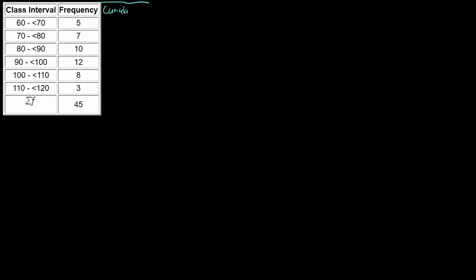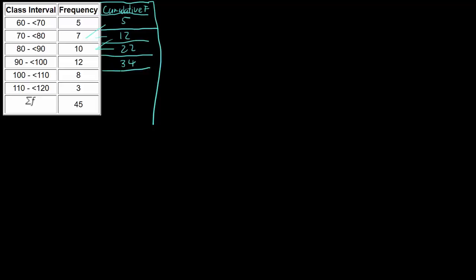To create our ogive we still need our cumulative frequency column, which we'll use to make up our ogive. The cumulative frequency is just a running total of our frequencies as we go down. So we start off with 5, then 5 plus 7 gives 12, 12 plus 10 gives 22, 22 plus 12 gives 34, 34 plus 8 gives 42, and 42 plus 3 makes 45. We know this works because this final value matches the sum of all our frequencies.